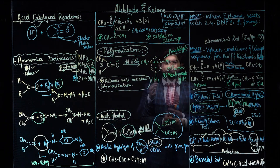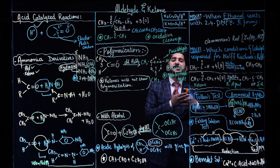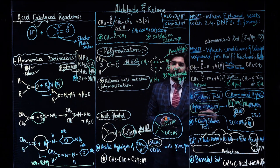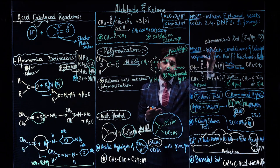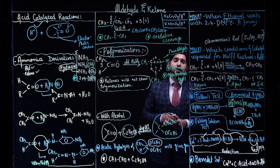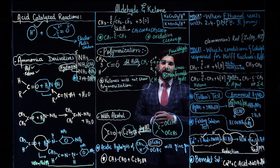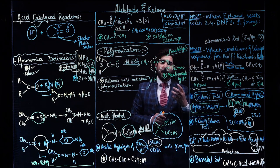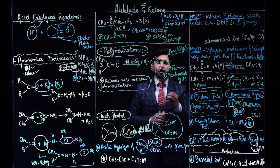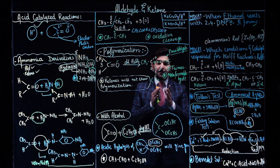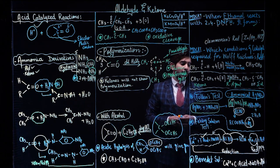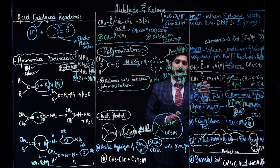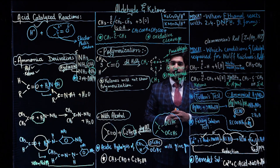A common examiner question: which test is positive for both aldehydes and ketones? Options: Tollens test, Fehling test, Benedict solution test, or 2,4-dinitrophenylhydrazine test? The answer is 2,4-dinitrophenylhydrazine — both aldehydes and ketones give a positive reaction with 2,4-DNPH. In this way we have completed the topic of aldehydes and ketones. If you have further queries or questions related to aldehydes, ketones, or carbonyl compounds, let us know in the comment box. Hope these classes are beneficial for you. These videos will surely help you for MDCAT, FSc, and A-levels. Stay tuned with us, thank you very much.